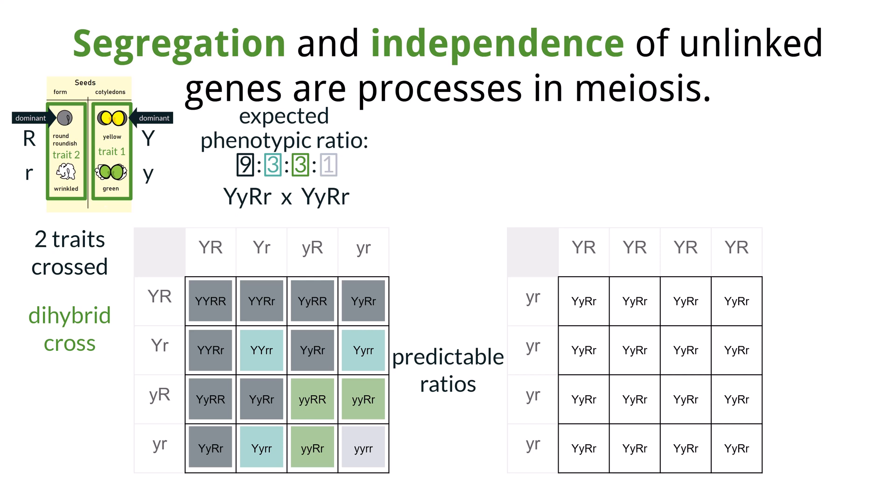The Punnett grid on the right shows the cross between two parents that are homozygous for both traits, one dominant and the other recessive. Notice that all of the offspring are heterozygous.